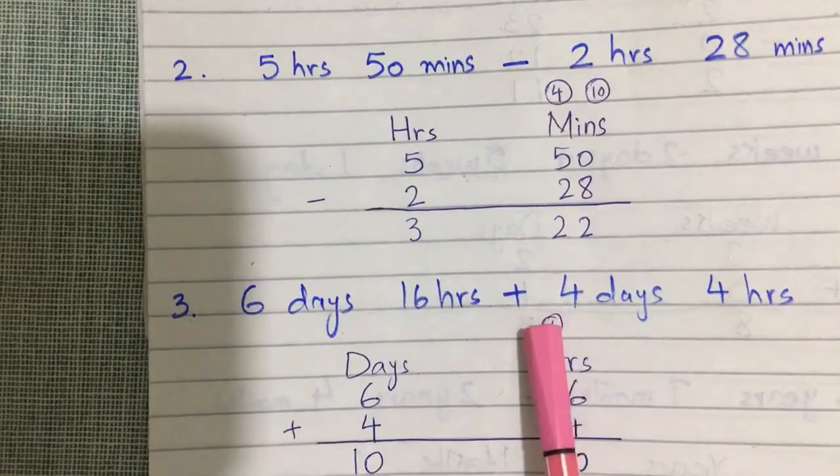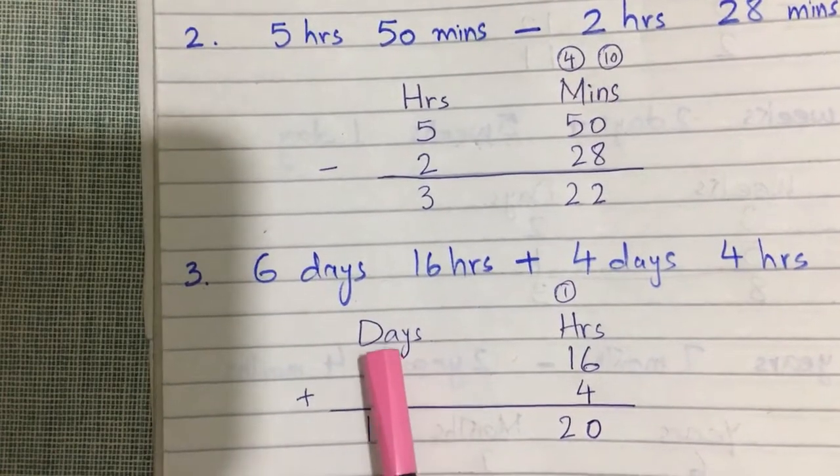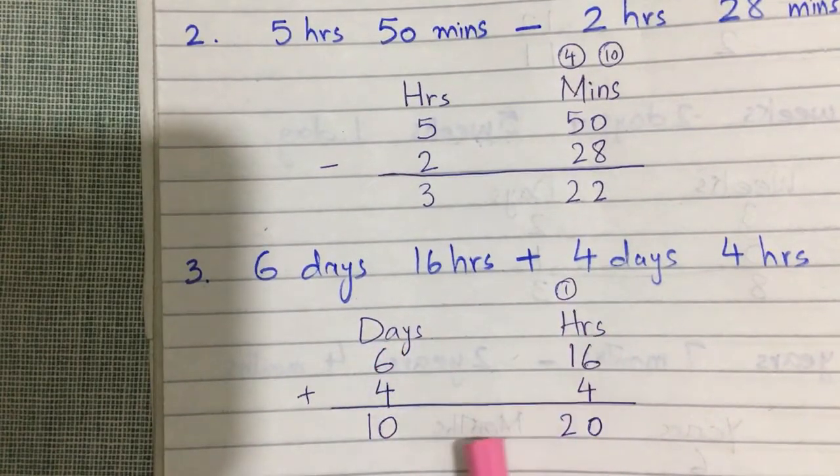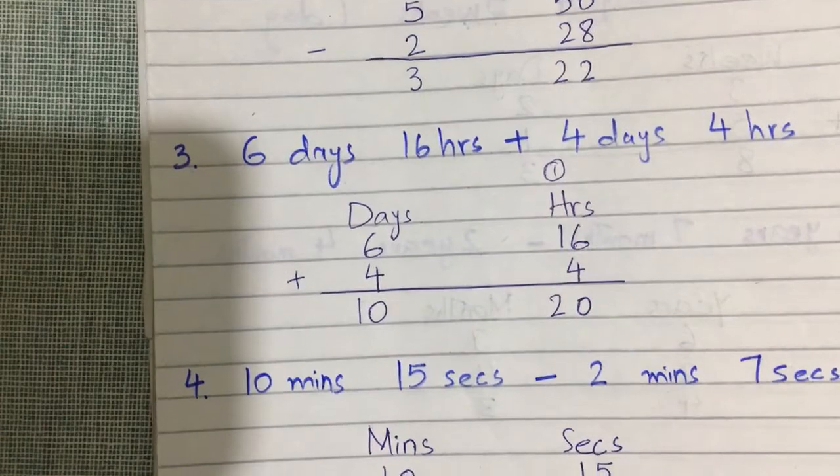Number third is 6 days and 16 hours plus 4 days and 4 hours. This is addition, so you have to add days and hours together. Simple.